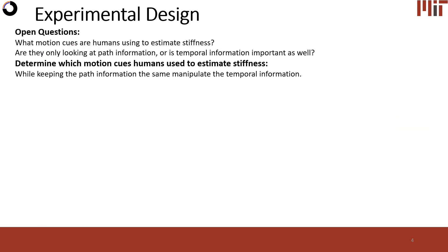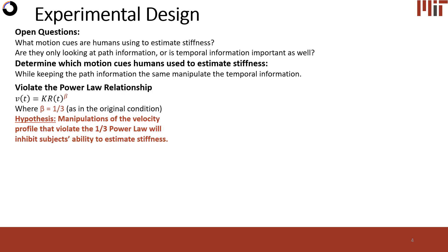I conducted this study to ask: what motion cues are humans using to estimate stiffness? More specifically, are they looking at path information — that is, displacement — or is temporal information, that is velocity and its derivatives, important as well? To answer this, I conducted three new conditions where I kept the path information the same and then manipulated the temporal information, or the velocity profile.